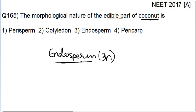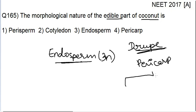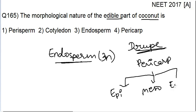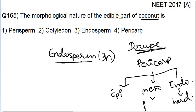When you talk about the other parts of coconut, the outermost part is the fleshy part. Coconut is an example of a drupe fruit. The pericarp has three parts: epicarp, mesocarp, and endocarp. The endocarp is the hard shell that you find inside the coconut. The mesocarp is the white fleshy layer that is present.